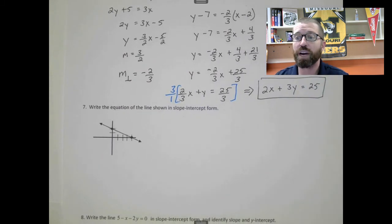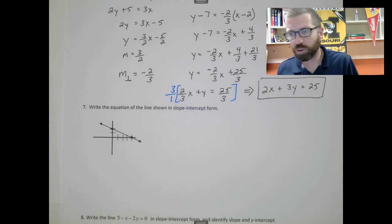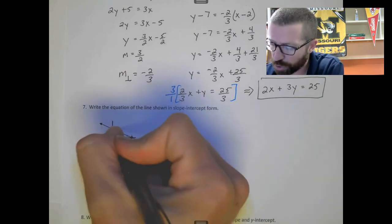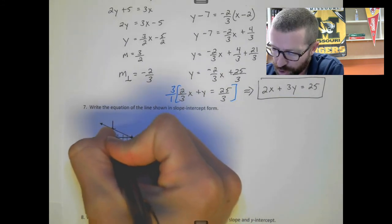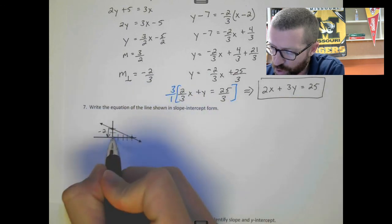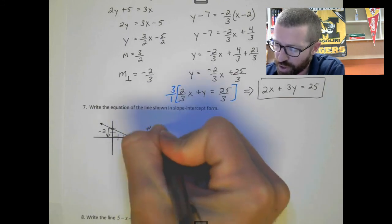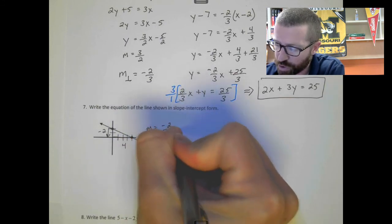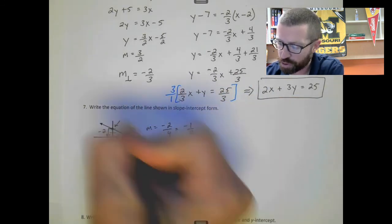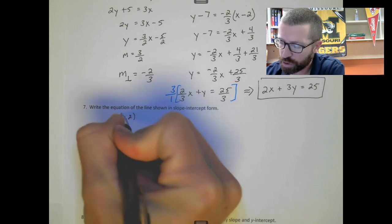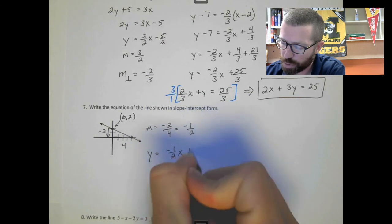You can also write the equation from a graph. Think about the slope — count the rise over run. Going down 2 and over 4 gives a slope of negative 1/2. You can also see the y-intercept is at 2, so b = 2. Therefore y = −1/2 x + 2.